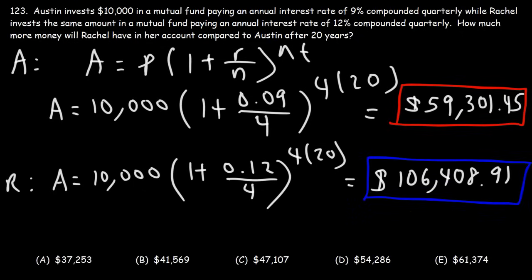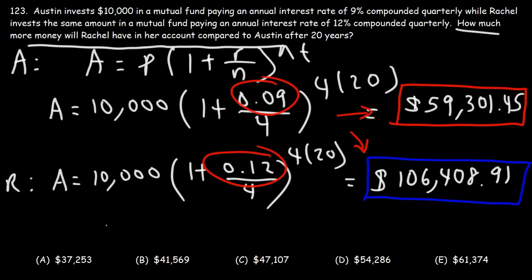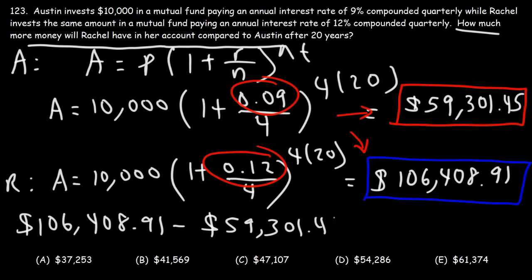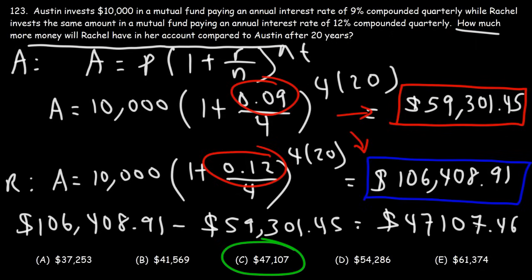As you can see, it's a lot higher than Austin's amount. A 12% interest rate will earn you a lot more money over time compared to a 9% interest rate. It makes a huge difference — even though the numbers may seem small, a 3% difference in the interest rate has a big impact over time. The question is asking how much more money Rachel will have, so we subtract the two numbers, giving approximately $47,107.46. Answer choice C is the best answer.